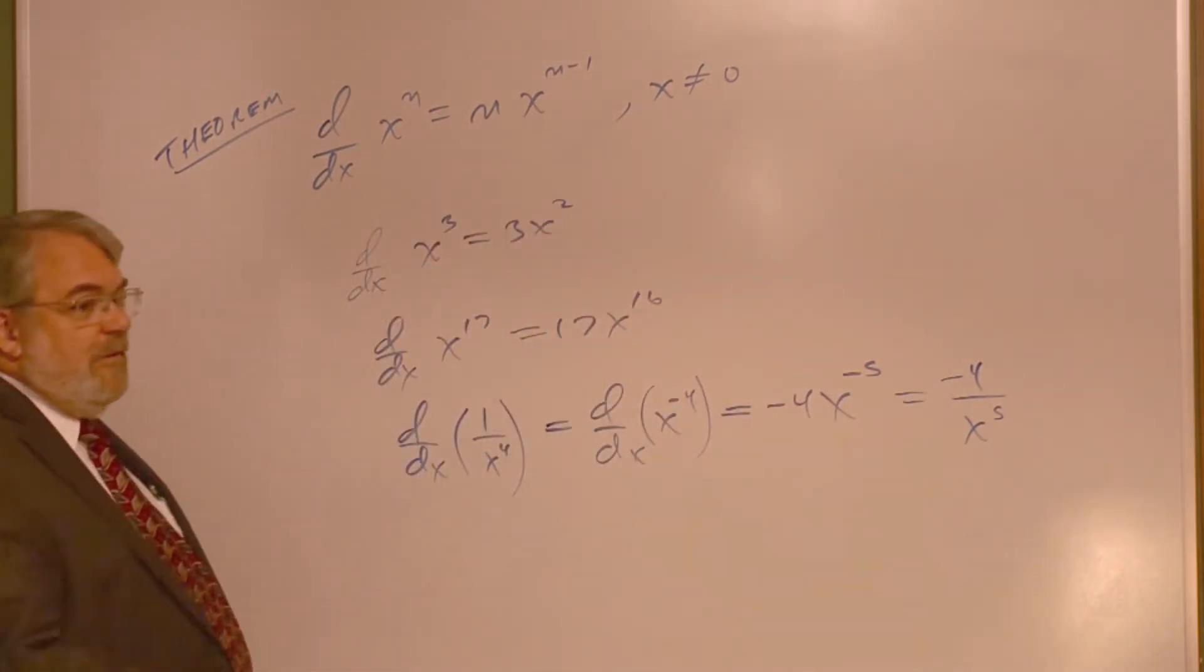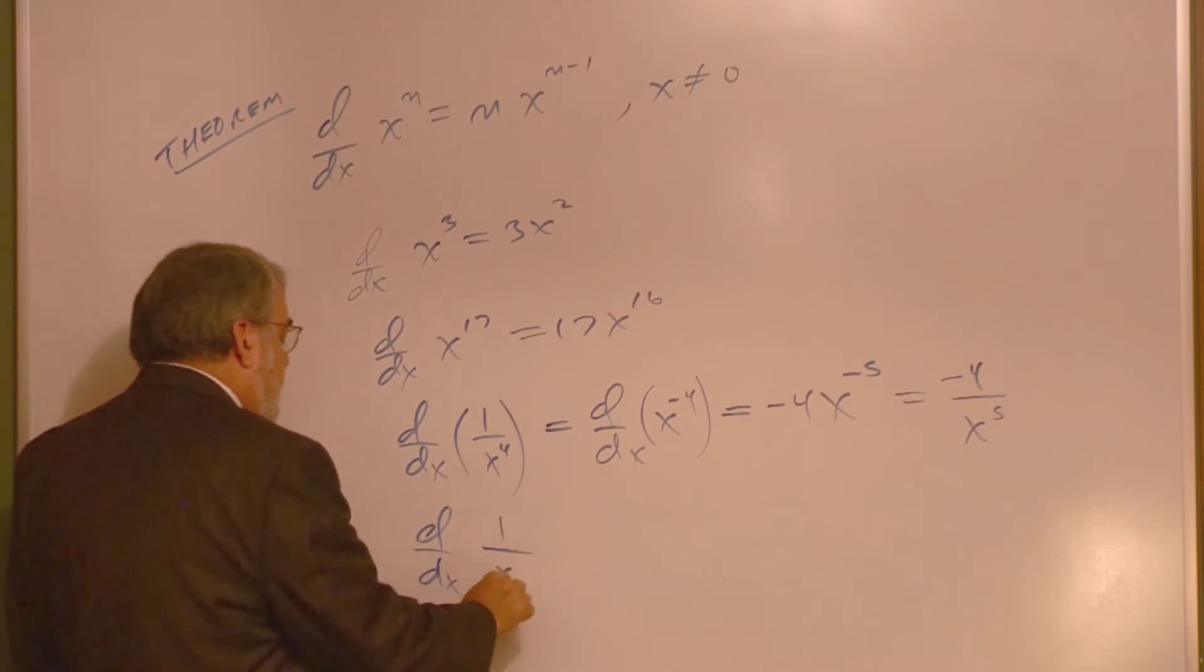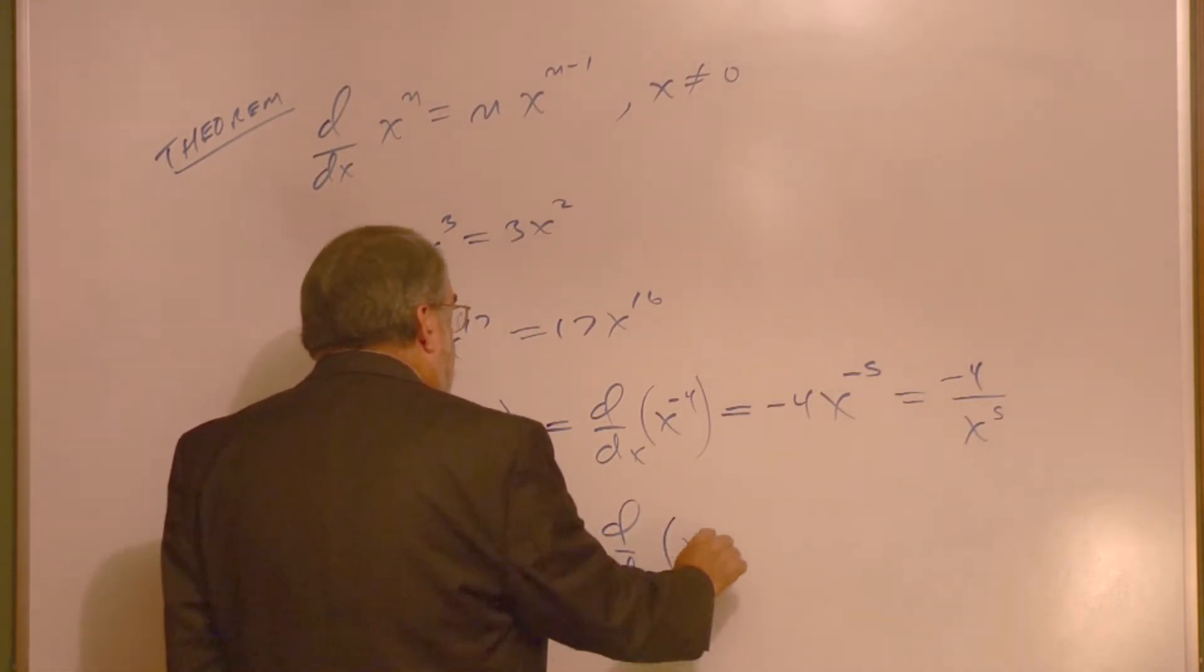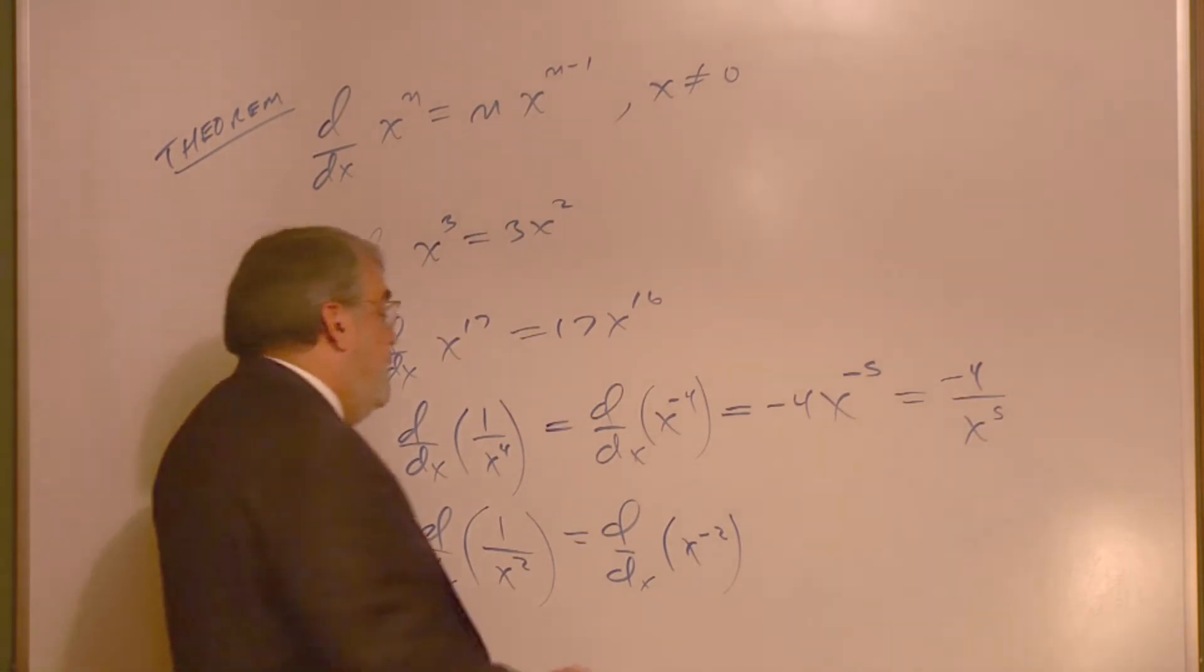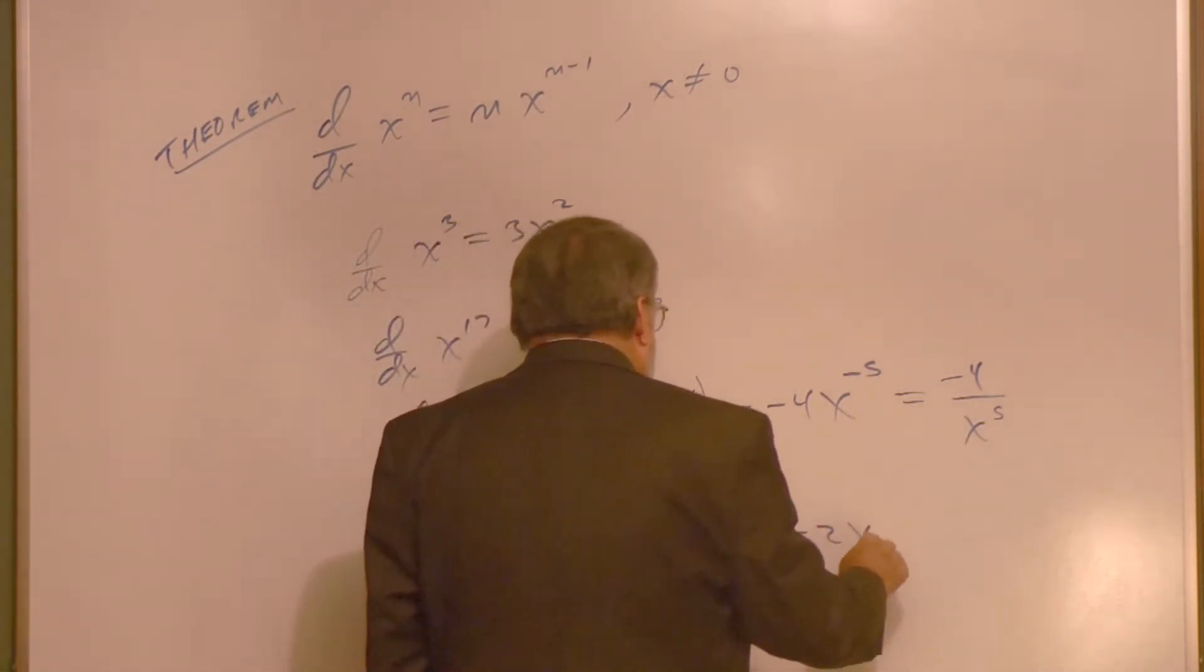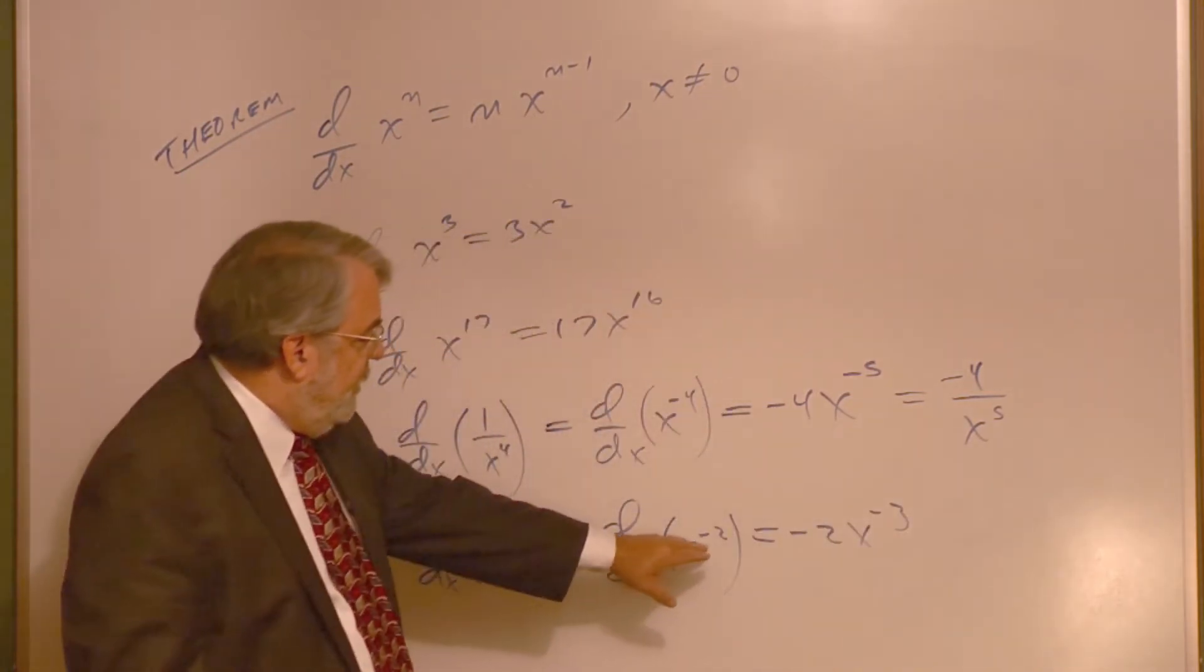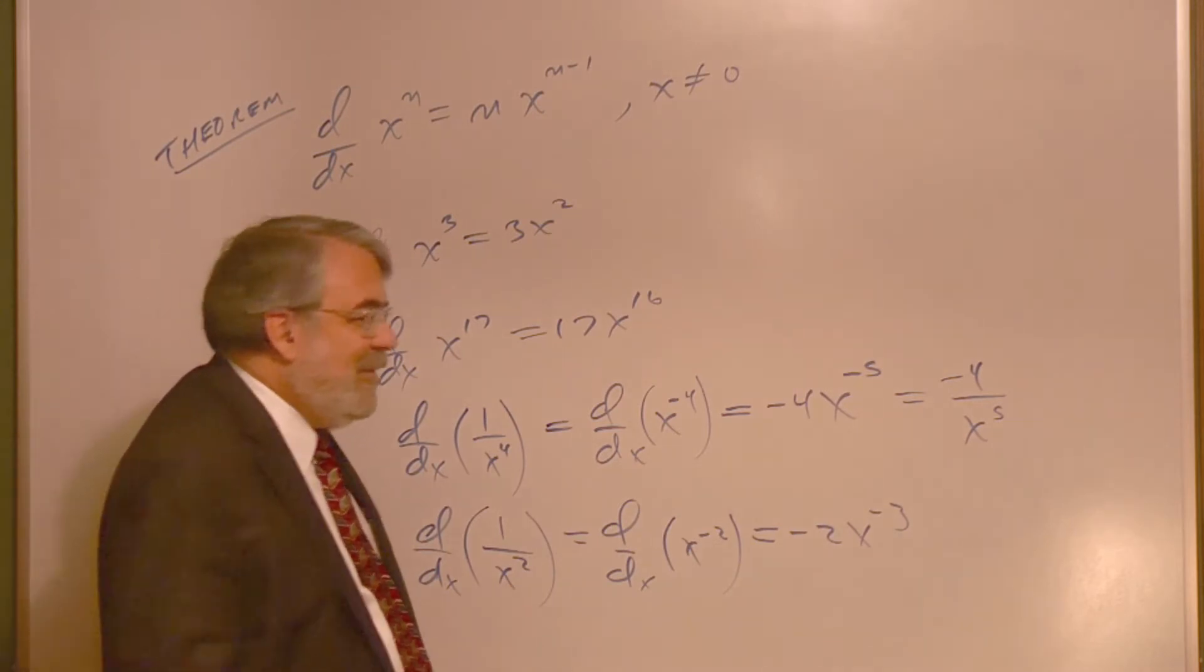Let's do another one of those. How about the derivative of 1 over x squared? That's the derivative of x to the minus 2 power. I'll bring that up: minus 2. And we get negative 2x to the negative 3. So again, this number comes in front. Subtract 1 from negative 2, you get negative 3.